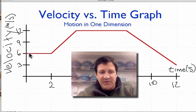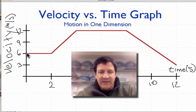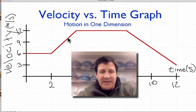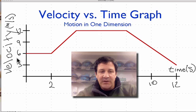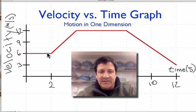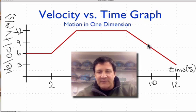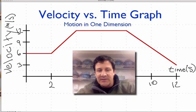Looking carefully at the graph, we can get some information right away. The velocity is constant over the first section. Then our speed increases from 6 to 12 meters per second. Then it's constant again, and then it decreases from 12 to 3. All of these velocities are positive, so we're always going in the positive direction — constant, increasing, constant, then decreasing speed.